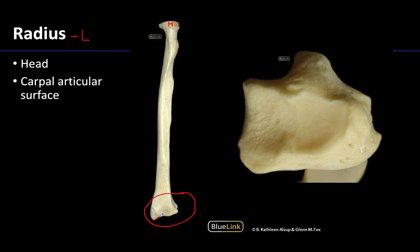On the distal-most end of the radius — you have to flip the bone over to really see it — there is an area called the carpal articular surface. This is very smooth, indicating hyaline cartilage was present there during life, and it plays a big role in joint formation, specifically in the wrist joint.